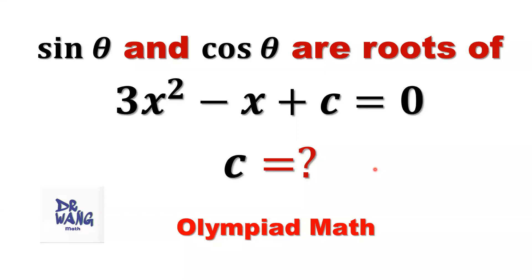Hello, everyone. I'm Dr. Wen. Here is the question. If sine theta and cosine theta are two roots of 3x squared minus x plus c equal to zero, we want to find c equals what?